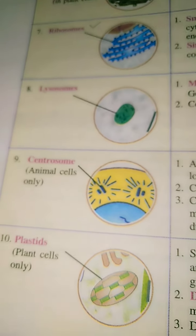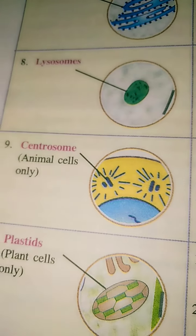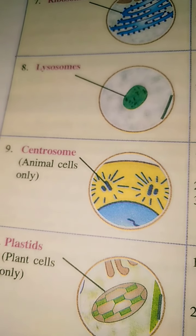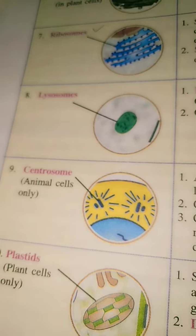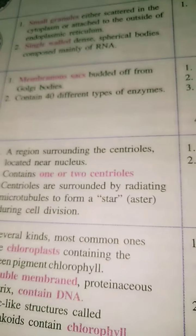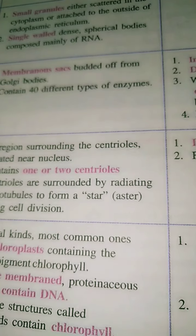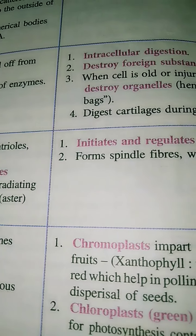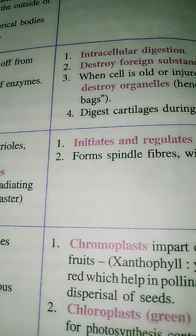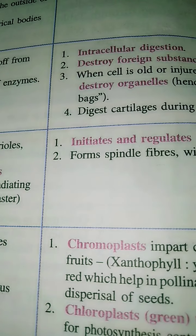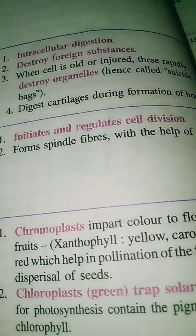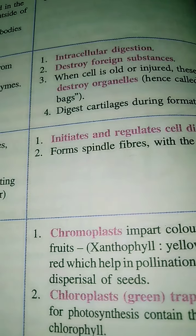Next we move to centrosome. Just like lysosome, centrosome also presents only in animal cells. Centrosomes are normally available near the nucleus, and they initiate and regulate cell division in animal cells.